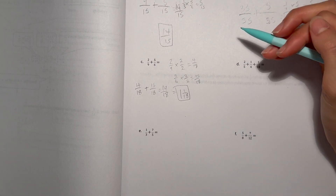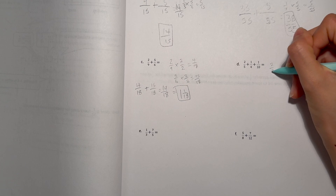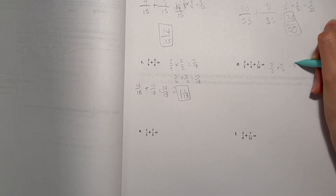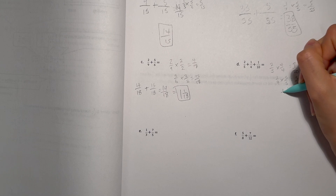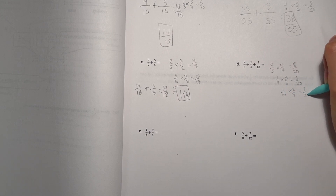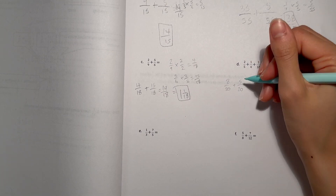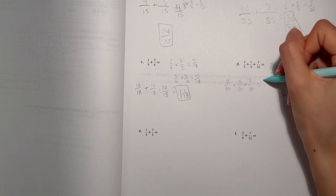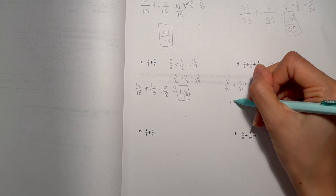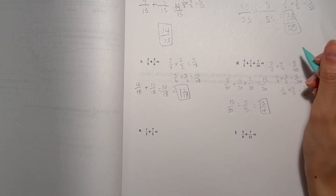Part d: two fifths plus one fourth plus one tenth. We know five times four is twenty, and ten times two is also twenty, so twenty is our common denominator. Two fifths times four equals eight over twenty. One fourth times five equals five over twenty. One tenth times two equals two over twenty. Adding eight twenty plus five twenty plus two over twenty: eight plus five is thirteen, plus two is fifteen over twenty. We can simplify fifteen over twenty by dividing by five, which gives us three fourths. That is our answer.